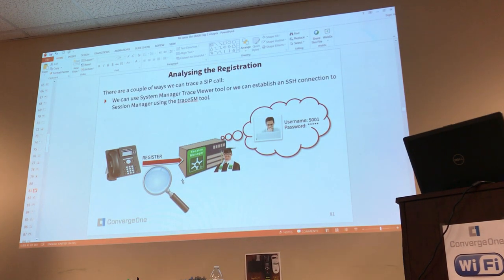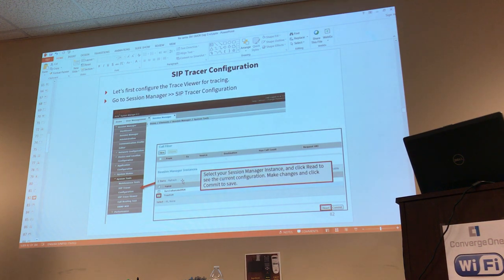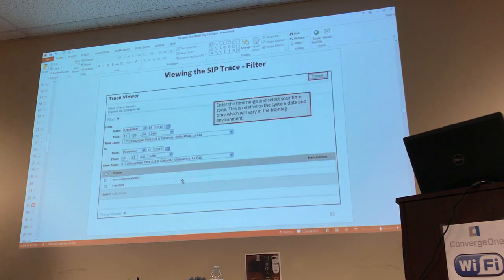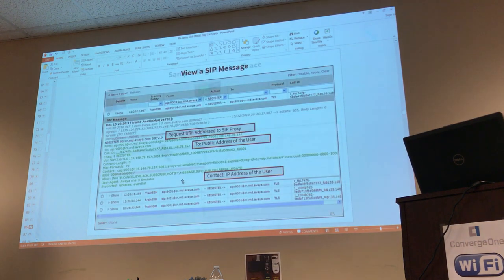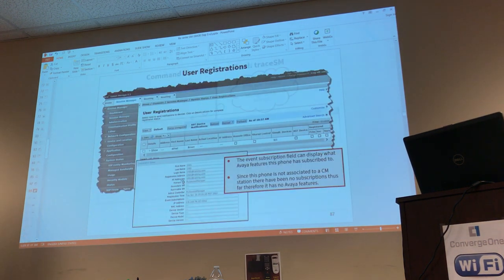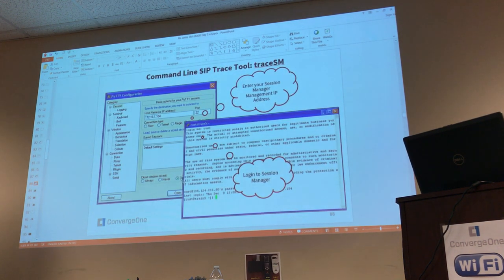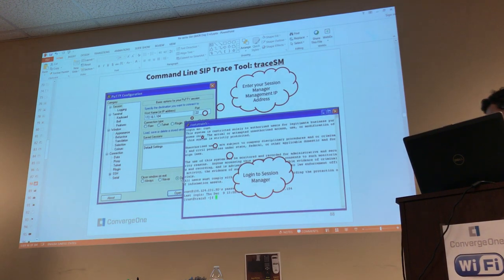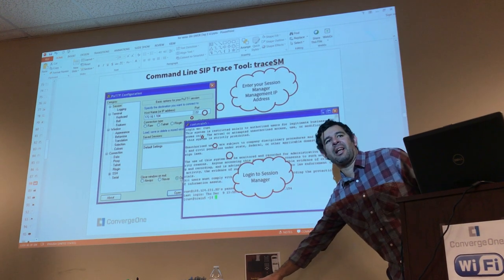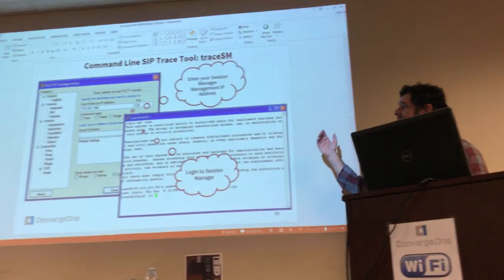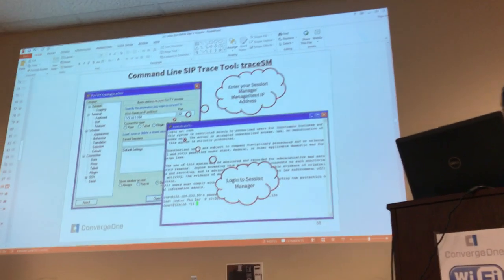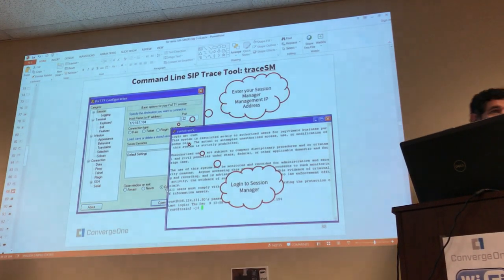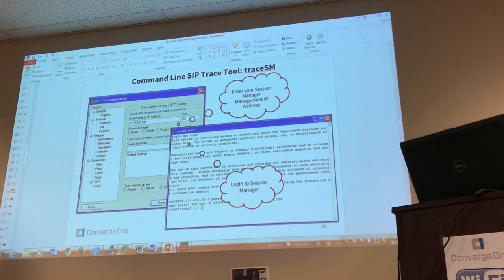This is not the order in the book — they tell you about the one in System Manager first. But I want to show you the one in Session Manager first, which is on page 88. I'll come back to the other one, I promise. TraceSM is accessed through the Session Manager shell. You need to connect to Session Manager using the management interface — not the SM100, but the management interface. Let's actually do it right now.